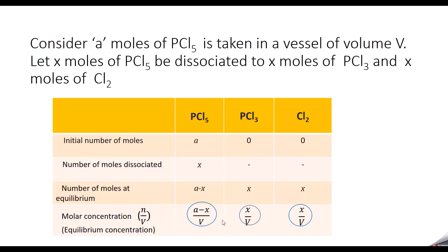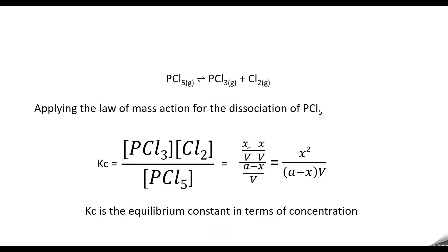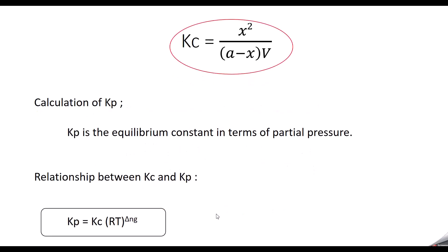Substituting the molar concentrations: PCl3 is X/V, Cl2 is X/V, and PCl5 is (A minus X)/V. So Kc equals (X/V × X/V) divided by (A minus X)/V. The V terms cancel, giving Kc equal to X² divided by (A minus X) times V.